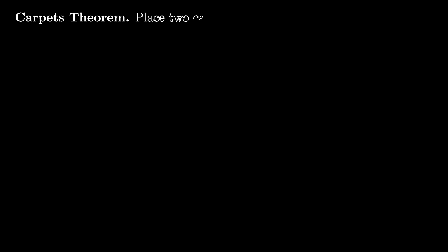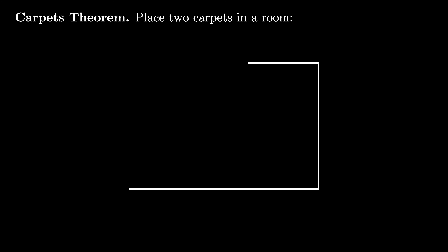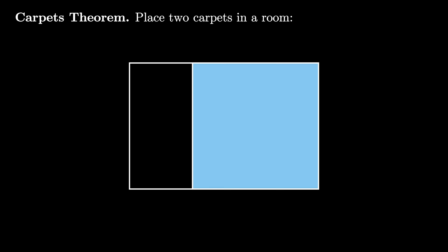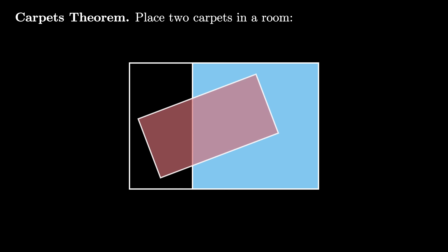One way to prove that certain numbers are irrational using a visual argument follows from the carpets theorem. The carpets theorem states that if you have a room and you place two carpets in the room, say like this,